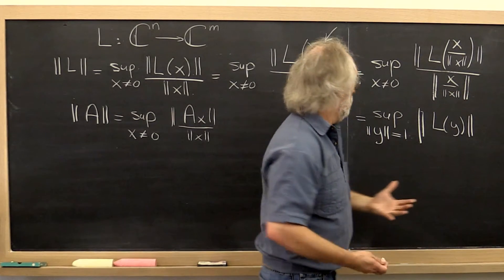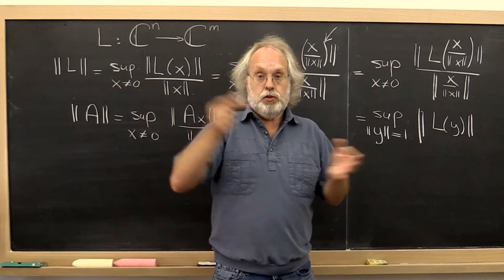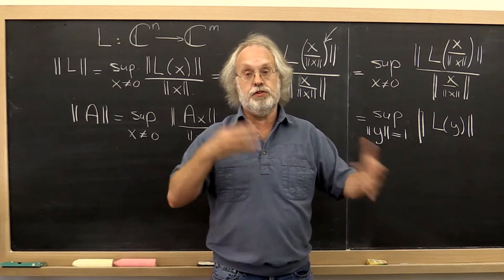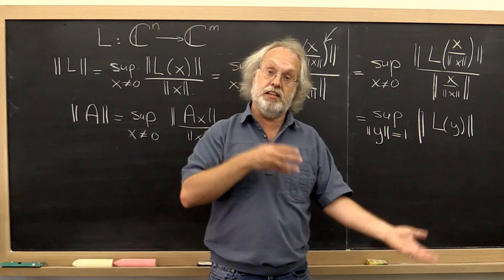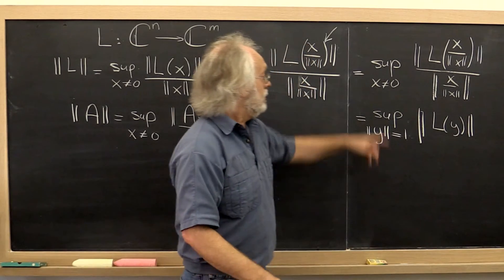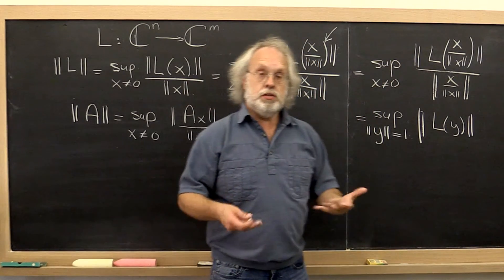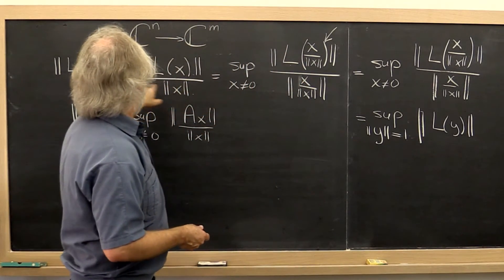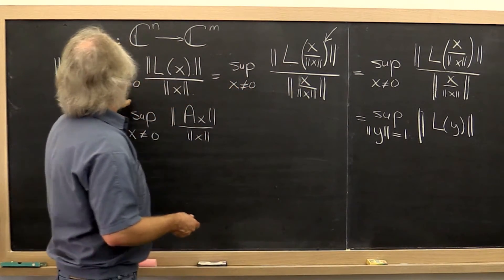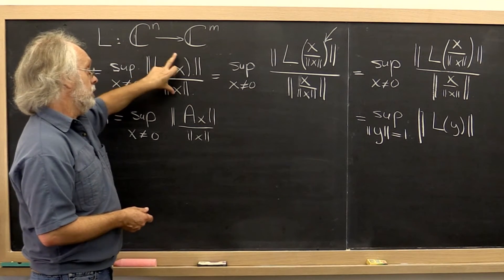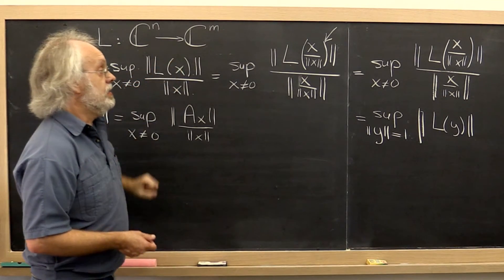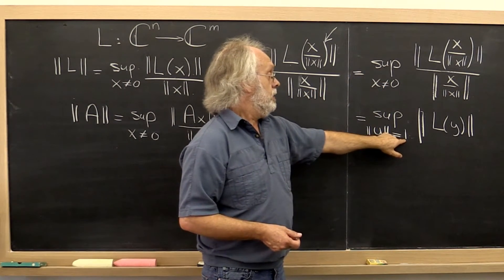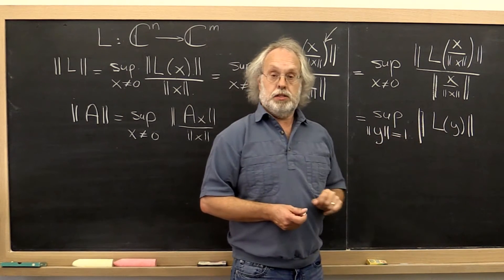So stretching, because linear transformations have the property that you can stretch the vector first and then transform, or you can transform the vector first and then stretch. And because norms are homogeneous, it's the case that the supremum over all vectors that are not the zero vector, by how much that is stretched, is the same as the supremum over all vectors of length 1. By how much those are stretched.